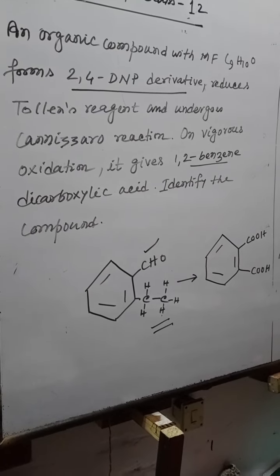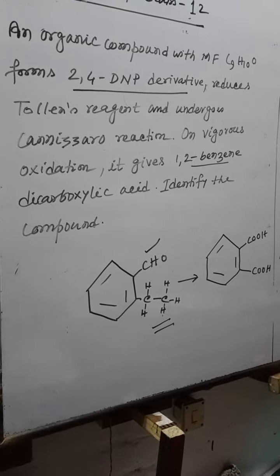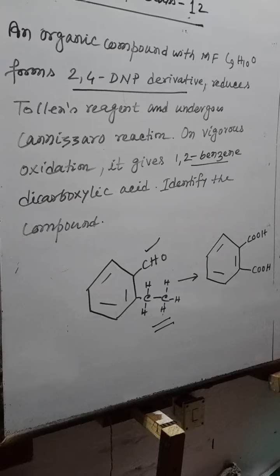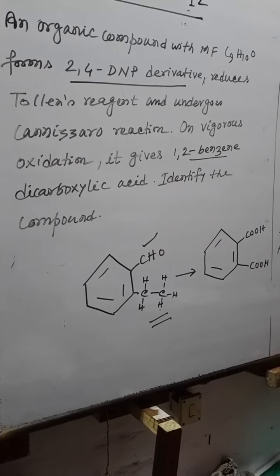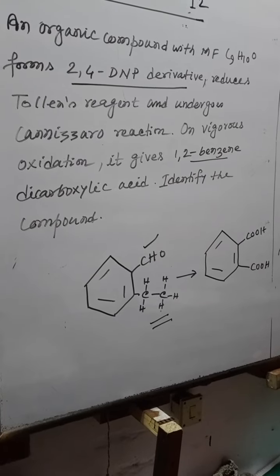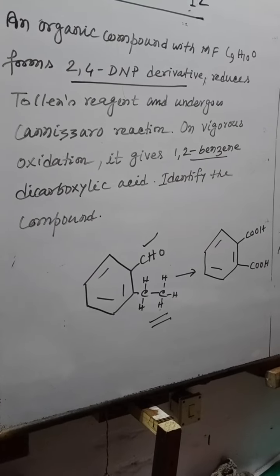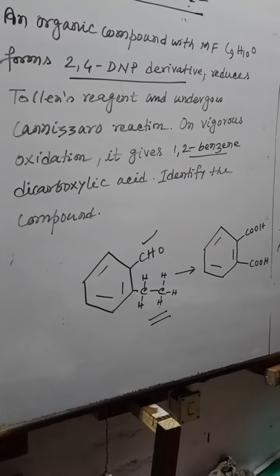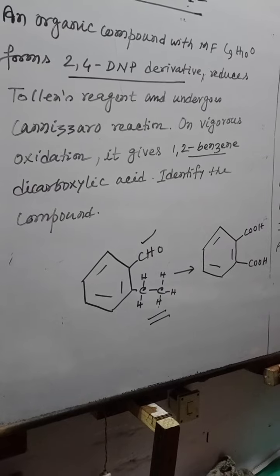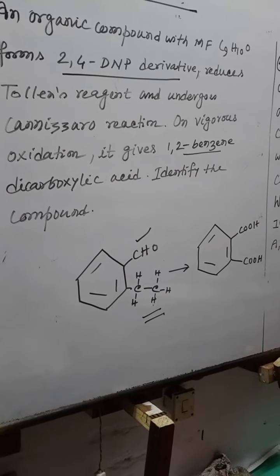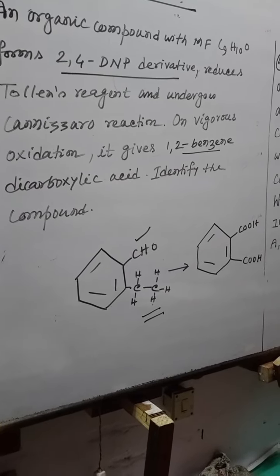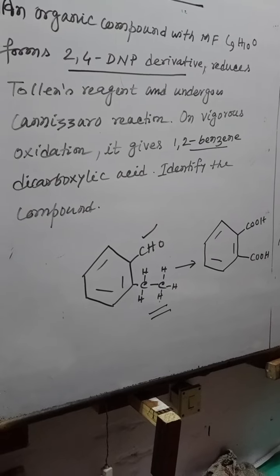It undergoes Cannizzaro reaction, which means there is no alpha-hydrogen present. On vigorous oxidation it gives 1,2-benzene dicarboxylic acid, so the compound has one CHO group, and in the next position a CH2 and CH3 group.